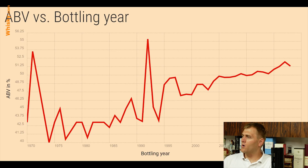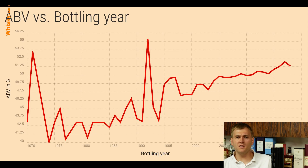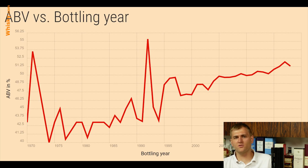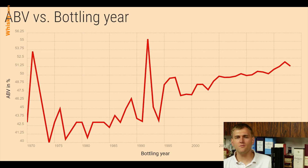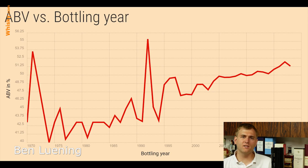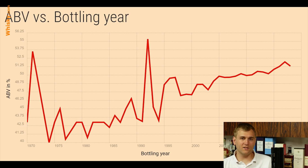What we see is a general trend towards higher ABVs. But before we say anything about statistics, you shouldn't trust statistics right away until you understand them. When we look at the statistics, first you have to ask what is shown on the x-axis. The x-axis shows the bottling years — therefore, only whiskies with bottling years are included in this diagram. Whiskies without bottling years cannot be included.